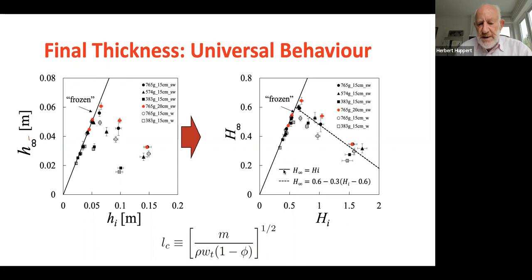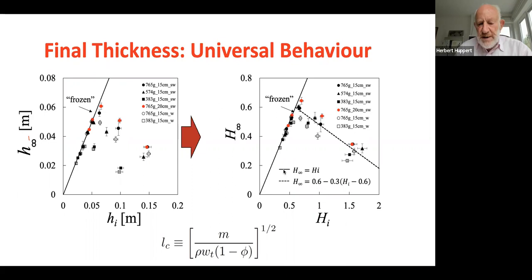This shows how you can non-dimensionalize everything using this length scale LC where the mass of particles and the volume content of the particle phi is known. We can plot it all together. So we understand what the experimental results are, but I don't think we fully understand all the explanations of what can happen.